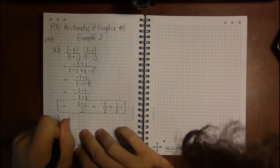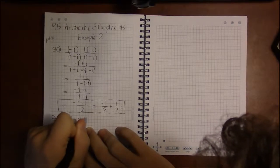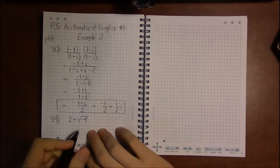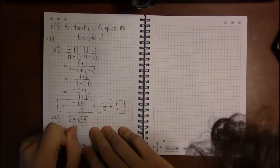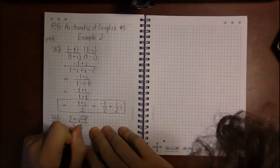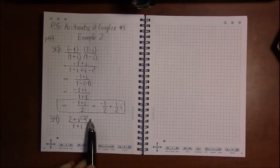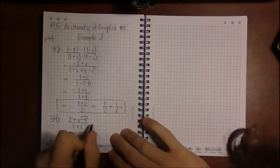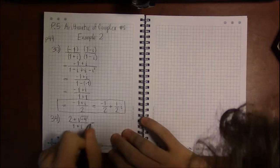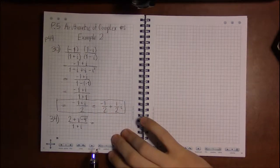We're looking at 2 plus square root of minus 4 divided by 1 plus i. Again we got this weird square root of a negative, but with complex numbers we can handle that. So I'm going to do that first before I worry about any division or any conjugates, before I start this whole process up.